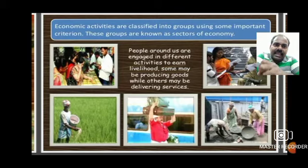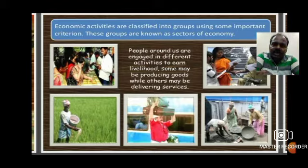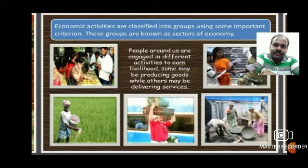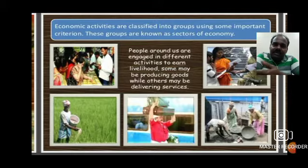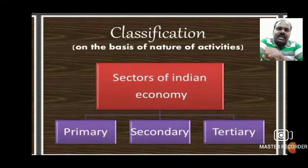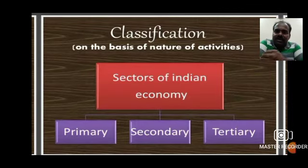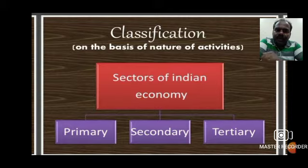People around us are engaged in different activities to earn livelihoods. Some may be producing goods while others may be delivering services. The activities that people are doing can be divided into three categories — they may be producing goods or giving some service. So, classification of sectors is based on the nature of activity. Based on what kind of activities people are doing, sectors can be divided into primary sector, secondary sector, and tertiary sector.